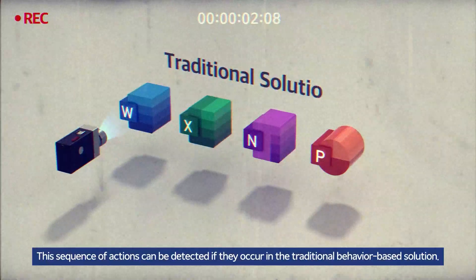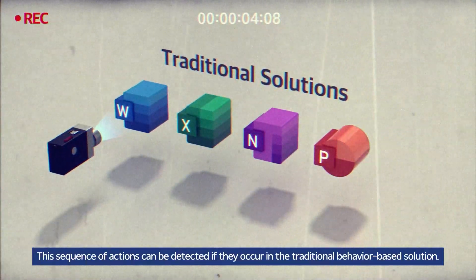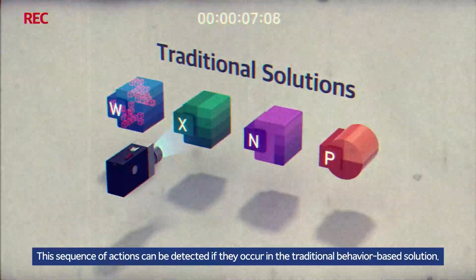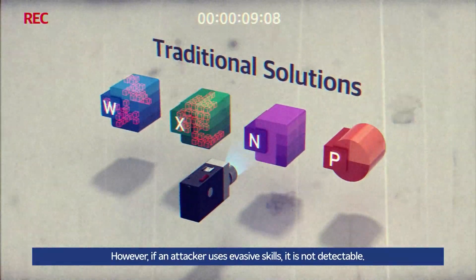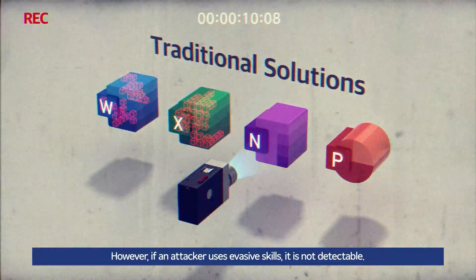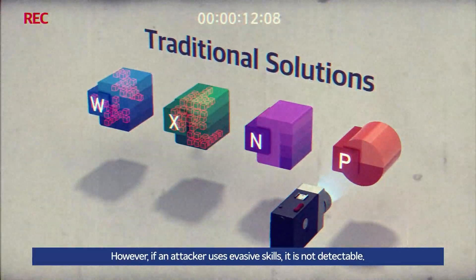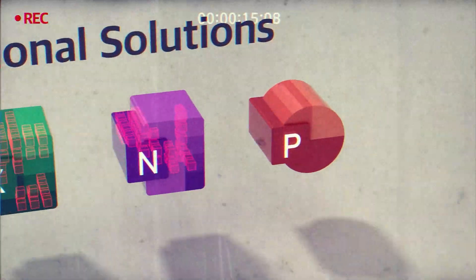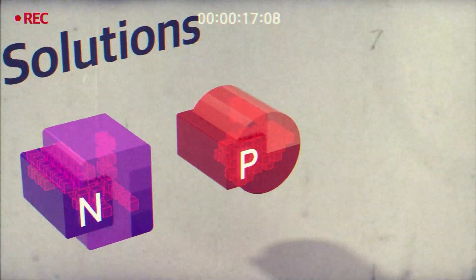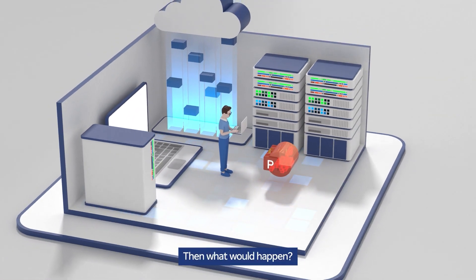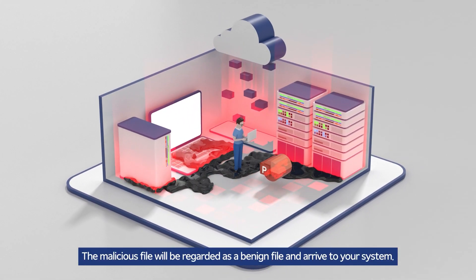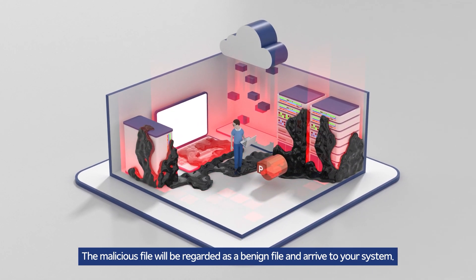This sequence of actions can be detected if they occur in a traditional behavior-based solution. However, if an attacker uses evasive skills, it is not detectable. The malicious file will then be regarded as a benign file and arrive on your system.